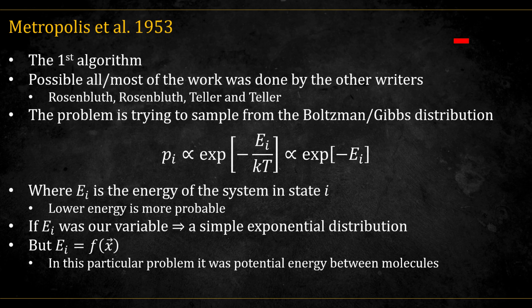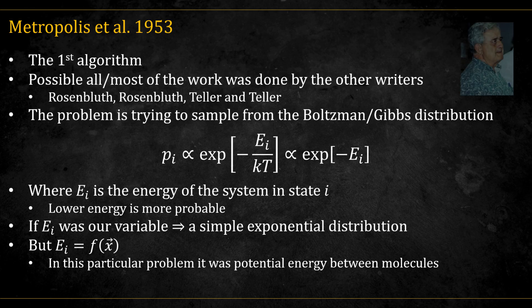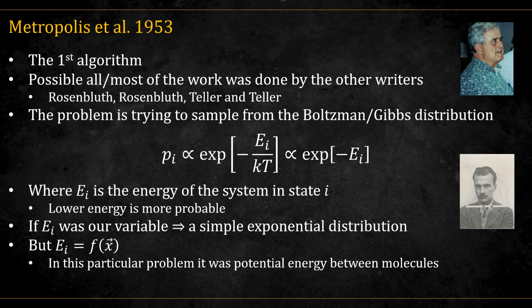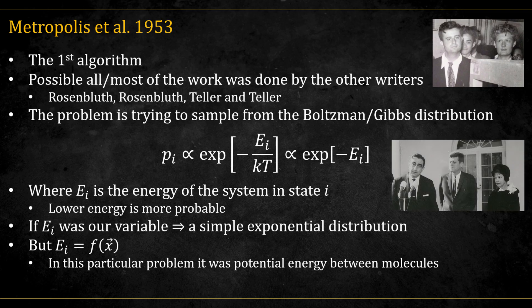So the main algorithm we'll talk about is the Metropolis algorithm. And calling it that may actually do a bit of an injustice to the other authors of the paper. Marshall Rosenbluth later claimed that Nicholas Metropolis, the first author, didn't really contribute much if anything to the work itself. Metropolis was the head of the computer lab where the research was done, but according to Rosenbluth all the actual scientific work came from the two couples, the Rosenbluths and the Tellers.